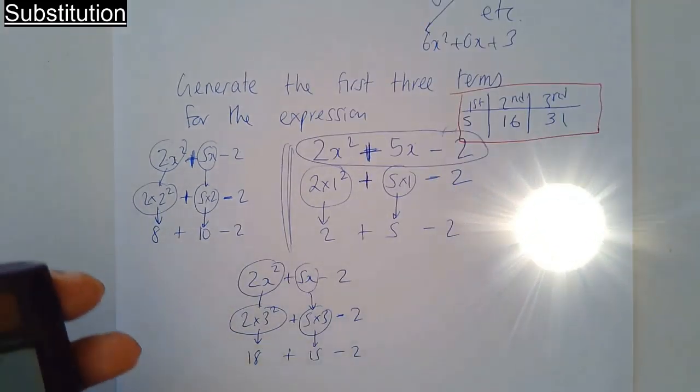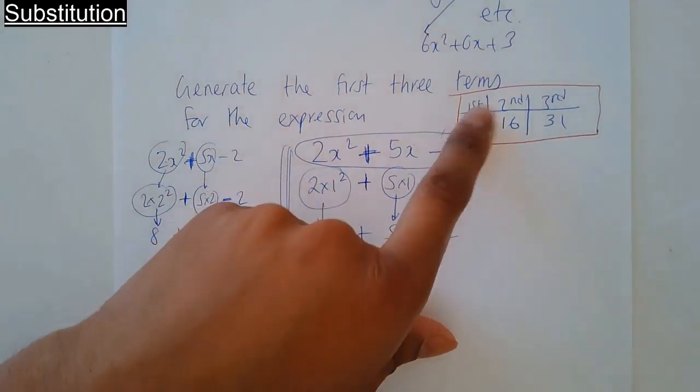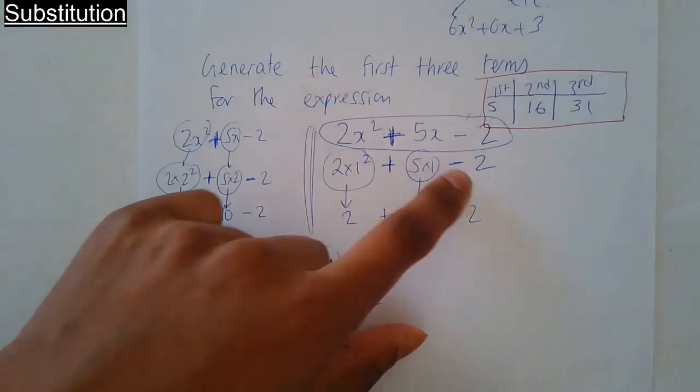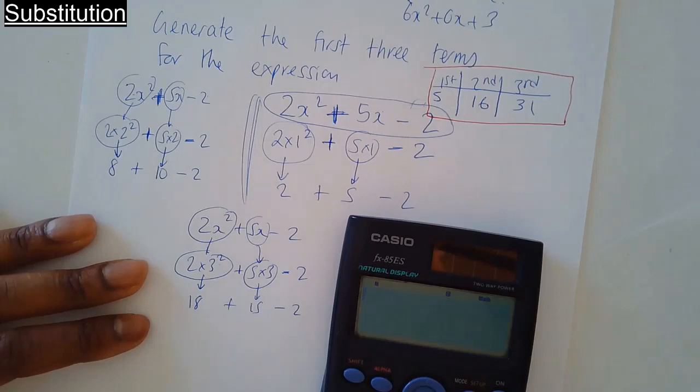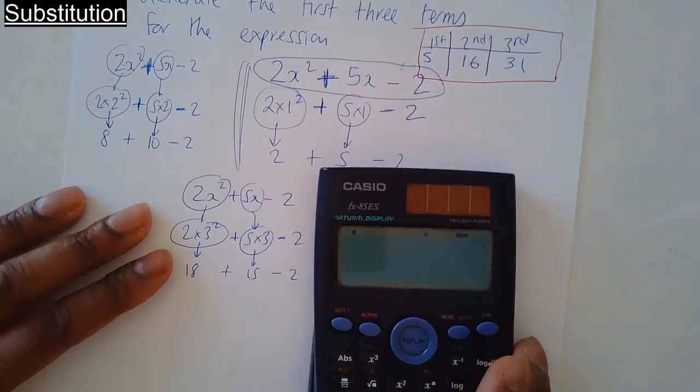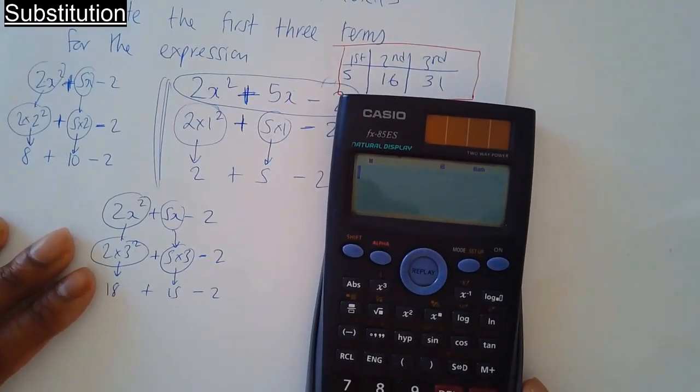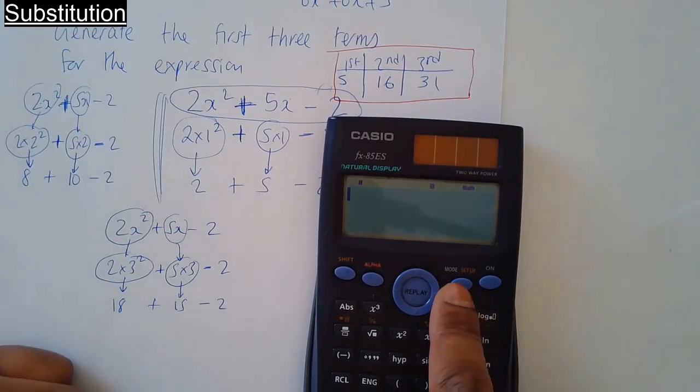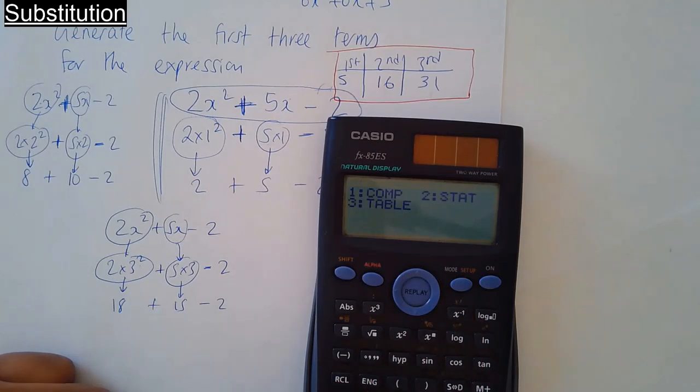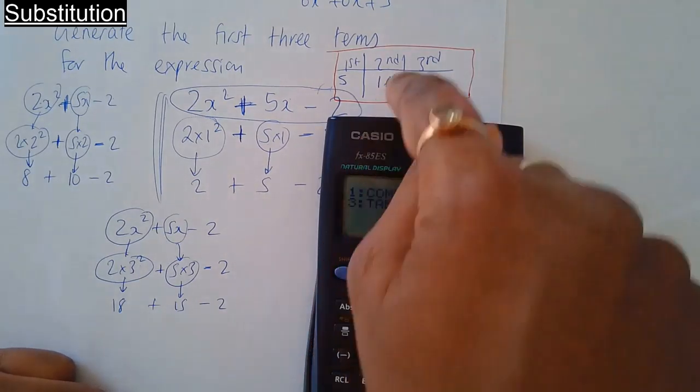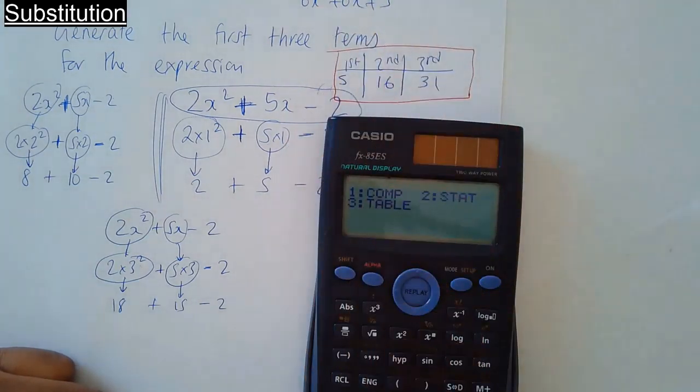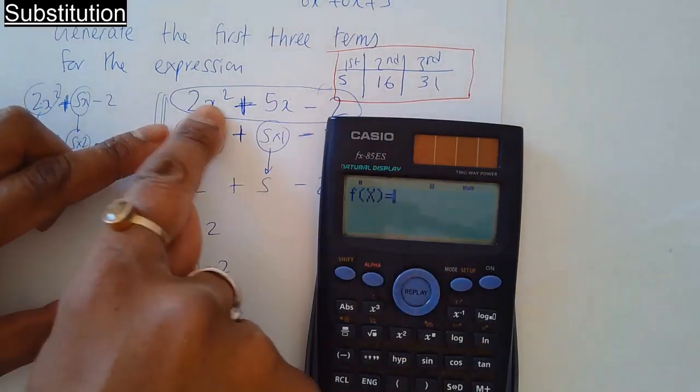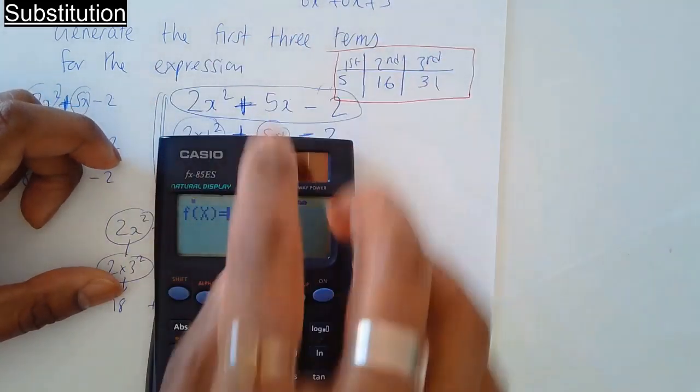There is a quick way of getting these numbers—first, second, third term—from this expression using a calculator. So if you've got one of these types of calculators, you can try this. Press Mode Setup. Option number 3, Table, because I'm going to generate a table like this. Option number 3.